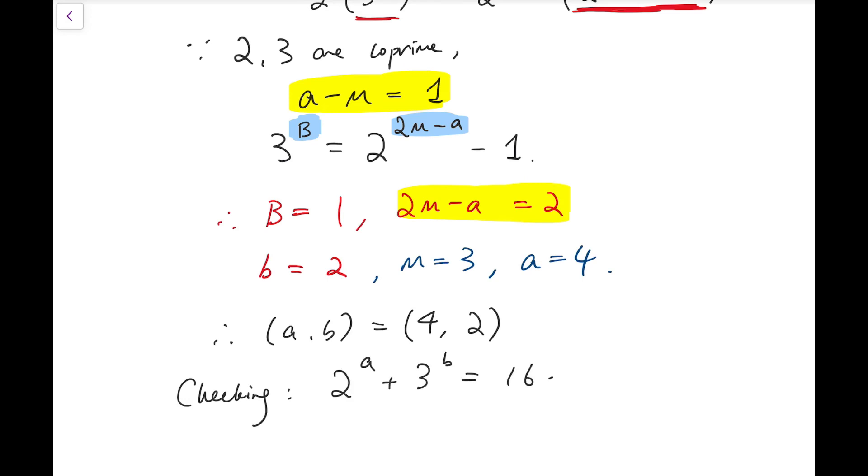And by checking, we have 2 to the power of a plus 3 to the power of b equals 16 plus 9, and that's indeed 5 squared, perfect square. So this is the solution to our problem.